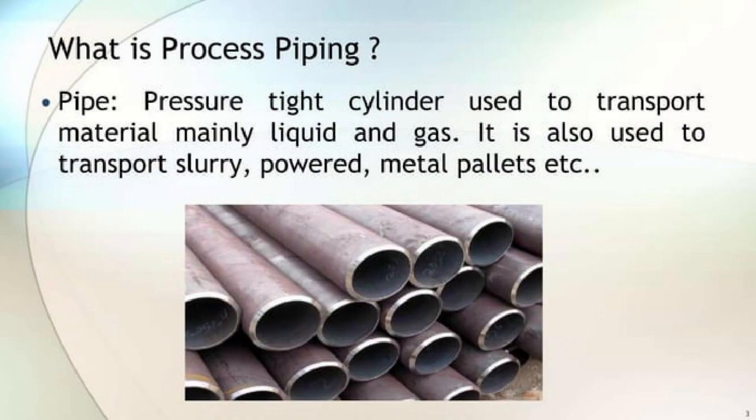First we will know what is Process Piping. Before that, we will know some basics. What is a pipe? A pipe is a pressure-tight cylinder used to transport material, mainly liquid and gas. It is also used to transport slurry, powder, metal pallets, etc.